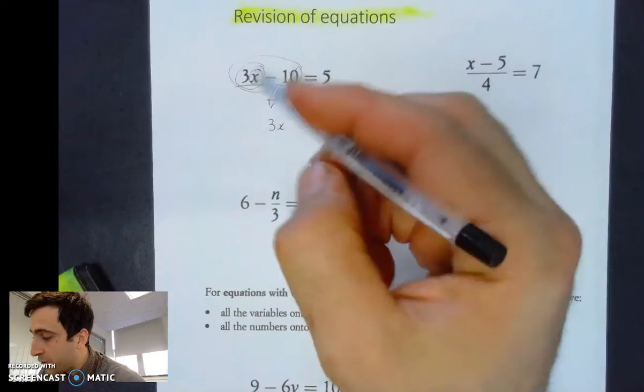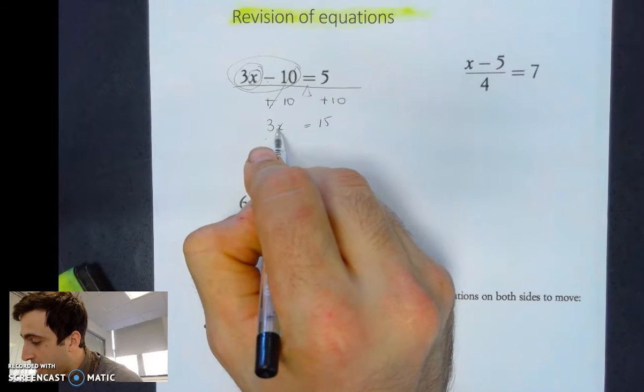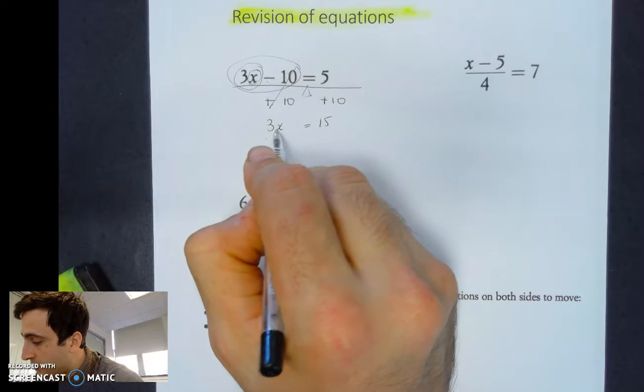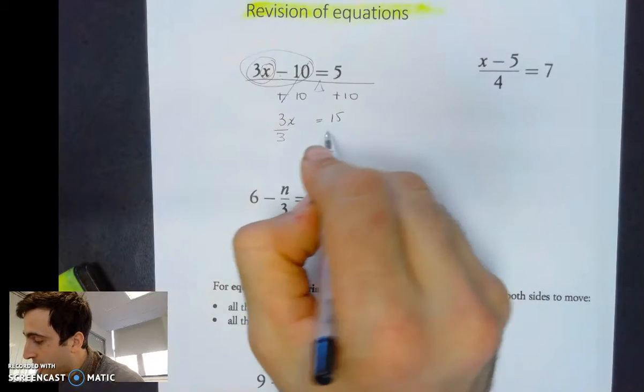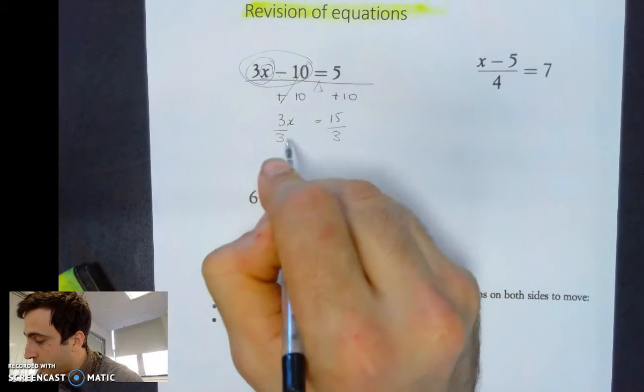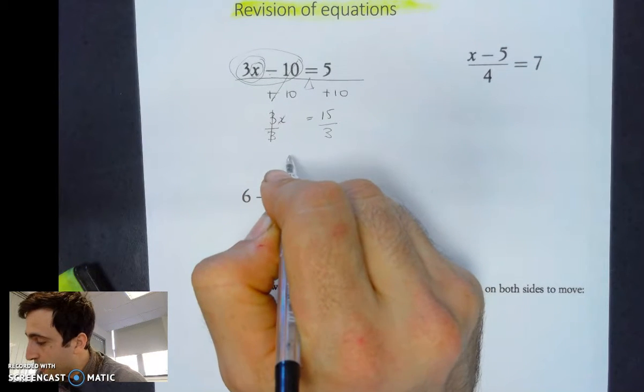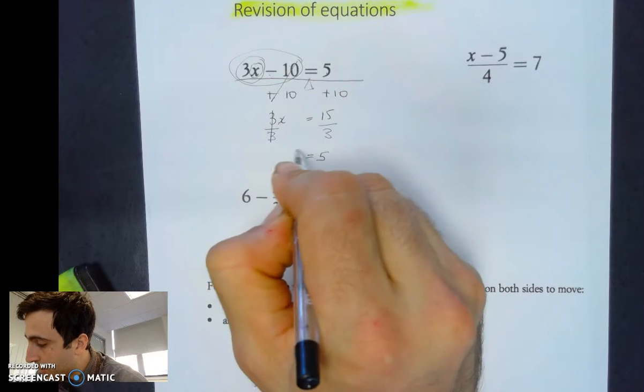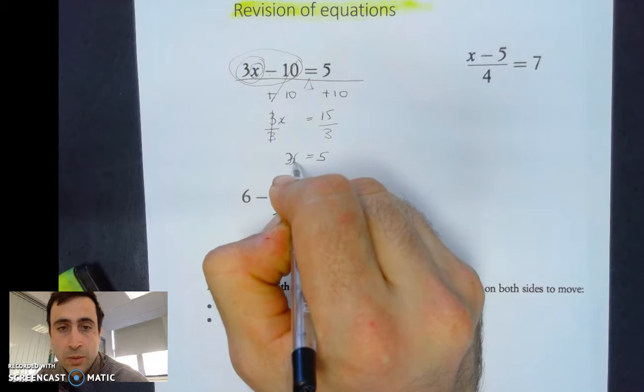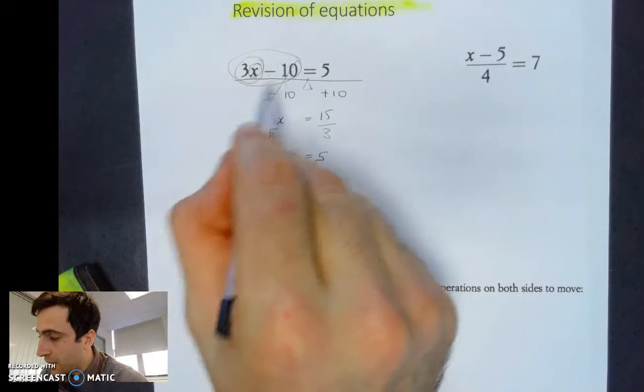Now that's 3 times x, so how do I get to the x or peel off that layer? If it's 3 times x, then I have to divide by 3. But what I do to one side I have to do to the other. So 3 divided by 3 cancels out, 15 divided by 3 equals 5. So here we have x equals 5. What we did is we peeled off the first layer then the second layer to get to the x underneath.